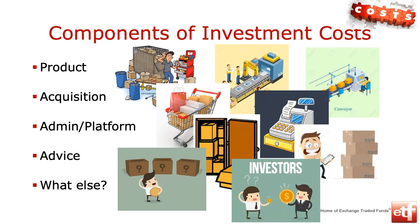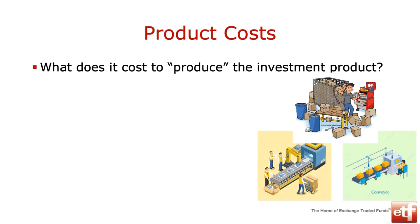Let's get straight into our production costs — what is involved in actually creating an investment product of some sort? I'm going to use as an example one of the most common things we're mostly familiar with, and that is a unit trust or a CIS. When we talk about producing an investment product, there are two components to it.